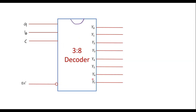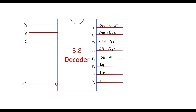The outputs of the 3-to-8 decoder are: Y0 = 000 = ĀB̄C̄, Y1 = 001 = ĀB̄C, Y2 = 010 = ĀBC̄, Y3 = 011 = ĀBC, Y4 = 100 = AB̄C̄, Y5 = 101 = AB̄C, Y6 = 110 = ABC̄, and Y7 = 111 = ABC.